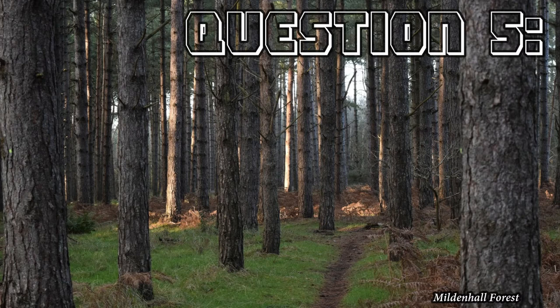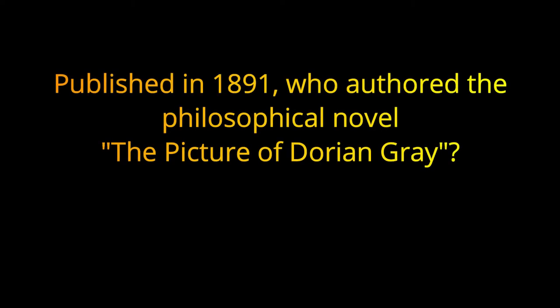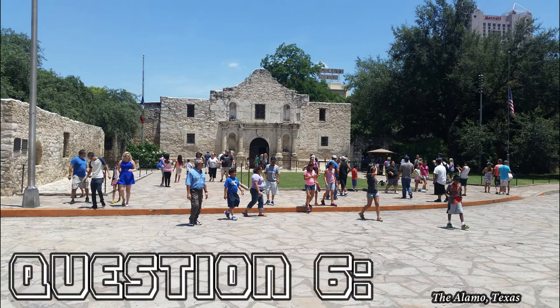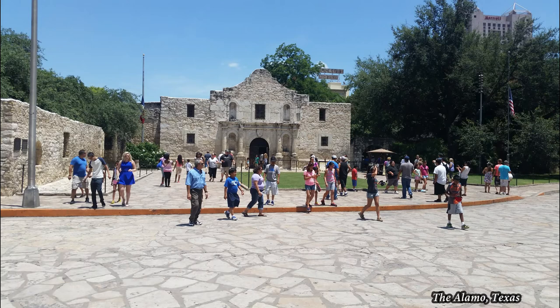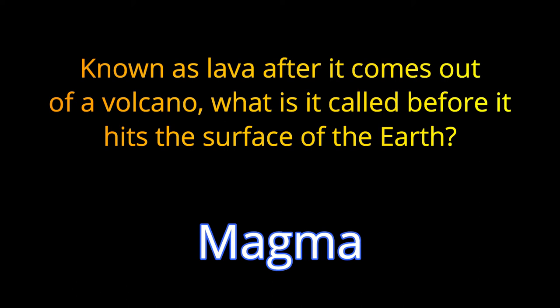Question 5. Published in 1891, who authored the philosophical novel The Picture of Dorian Gray? The answer is Oscar Wilde. Question 6. Known as lava after it comes out of a volcano, what is it called before it hits the surface of the earth? The answer is Magma.